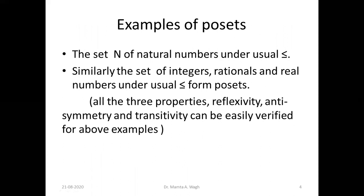Now let us see a few examples of partially ordered sets. First is the set N of natural numbers under the usual ≤ — the less-than-or-equal-to in the usual mathematical sense, like one is less than two, two is less than three. The set N of natural numbers under usual ≤ forms a poset. You can easily verify the three properties: every number is equal to itself, so reflexivity holds.